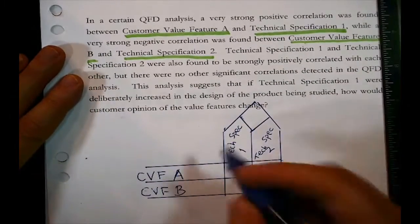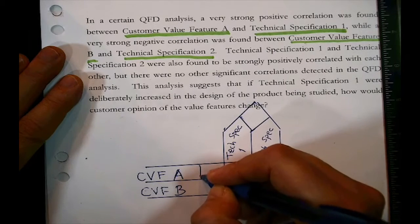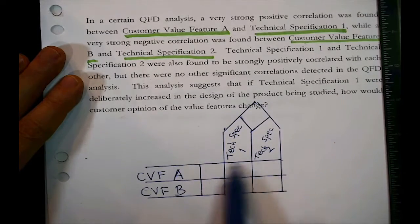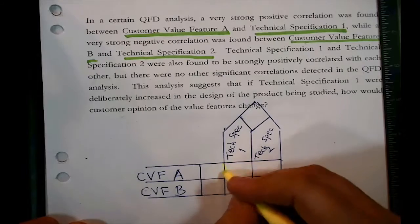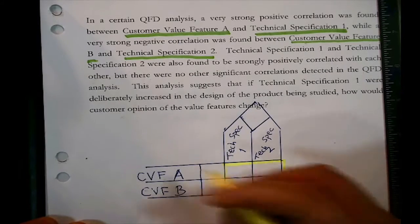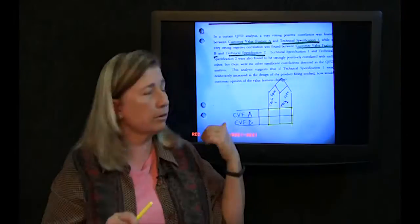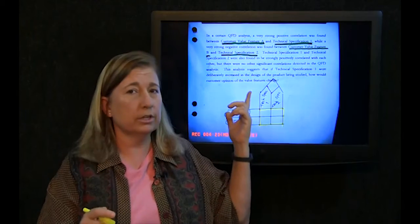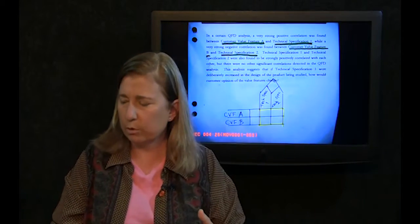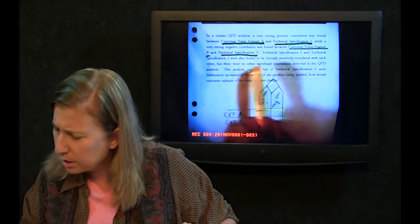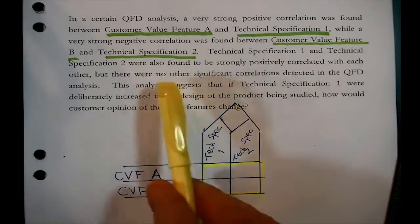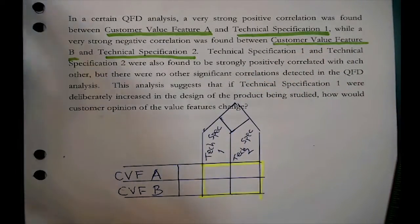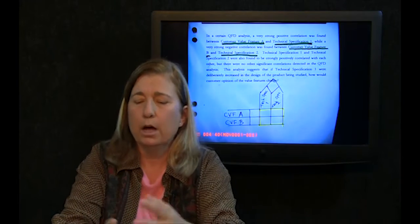In a QFD diagram there's usually an extra column to the left of the relationship matrix to store any weights between the two value features. In this case, the problem didn't mention whether any one feature was more important than the other. What it did mention is that there were some correlations. The diagram indicates what's correlated with what.